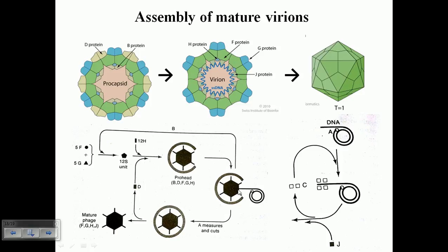So to produce a mature capsid from a procapsid it requires the entry of the DNA or genomic material inside.